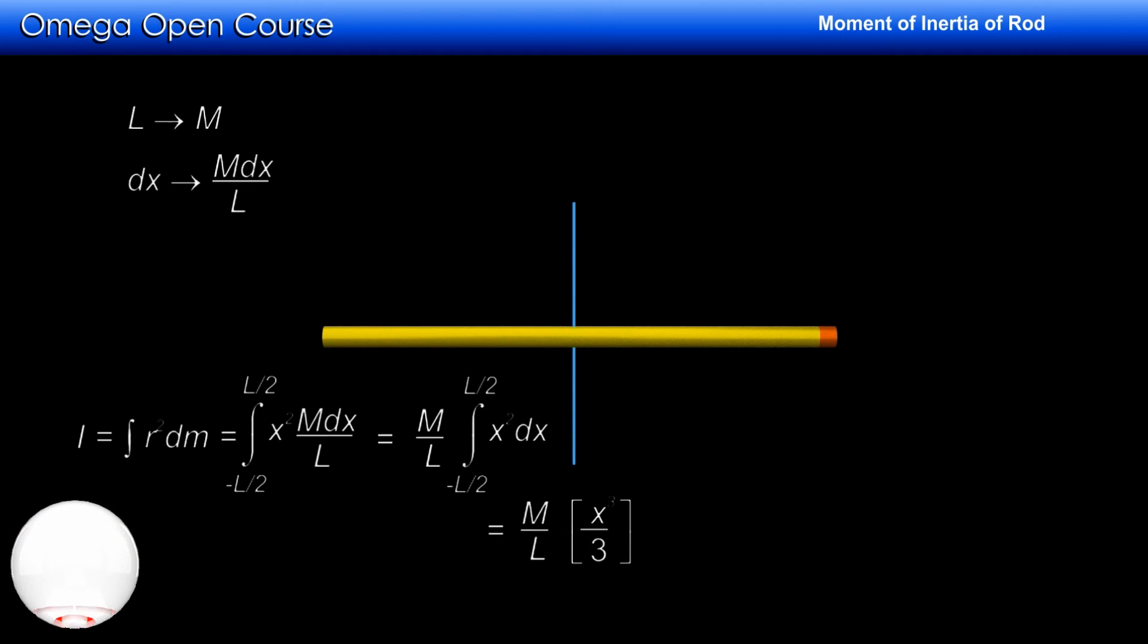Integrating, we get m by l into x cube by 3 with lower limit of minus l by 2 and upper limit of l by 2. Putting the limits, we get i is equal to m by l into l cube by 24 minus minus l cube by 24, which on simplification yields 1 by 12 ml square.